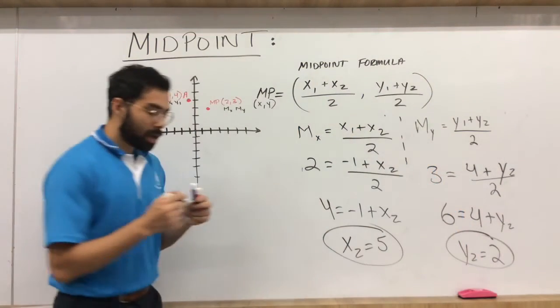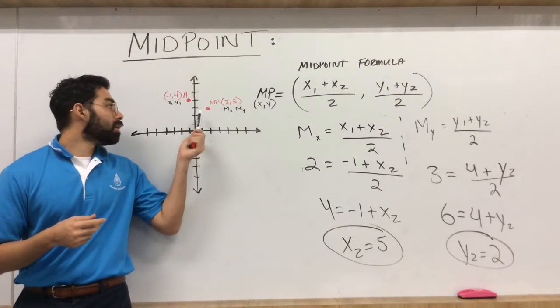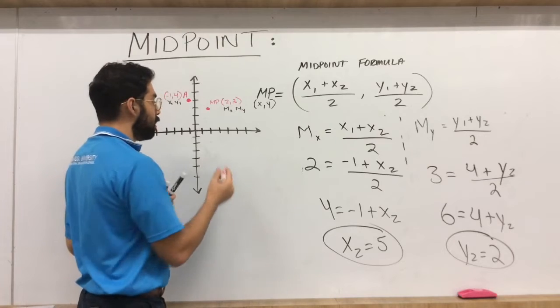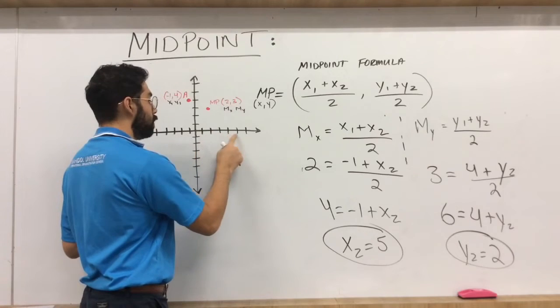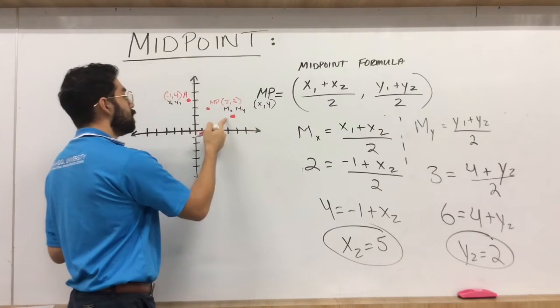Okay, so let's clean this up a bit. So we just got the other endpoint given our two ordered points here. So our endpoint is located at 5, 2. Okay, which makes sense.